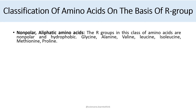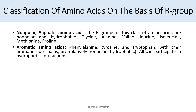The R group in non-polar aliphatic amino acids is non-polar and hydrophobic, meaning they fear water. Glycine, alanine, valine, leucine, isoleucine, methionine, and proline are all the non-polar or aliphatic amino acids. Then we have aromatic amino acids: phenylalanine, tyrosine, and tryptophan, with their aromatic side chains, are relatively non-polar and hydrophobic.